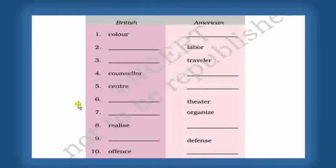Let's see how. Colour: in British English it is spelled C-O-L-O-U-R. Americans write it as C-O-L-O-R. Please write that down. C-O-L-O-R.